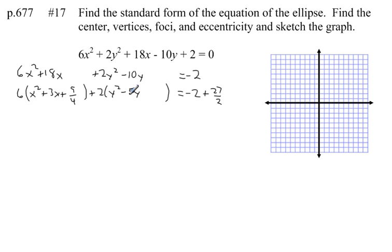I can complete the square right here the same way. Half of negative 5 is negative 5 halves. And if I square that, I get 25 fourths. Now, don't add 25 fourths on the right-hand side. Instead, 2 times 25 fourths is 50 fourths. And I can reduce that to 25 halves.